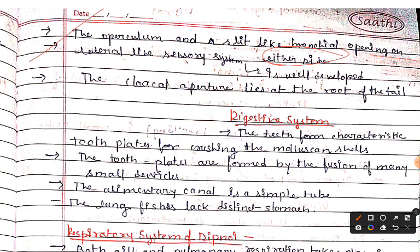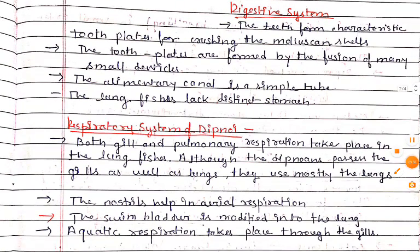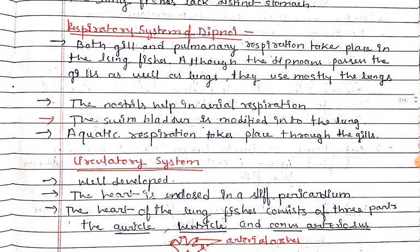The cloacal aperture lies at the base of the tail. The teeth form characteristic tooth plates for crushing molluscan cells. The tooth plates are formed by the fusion of many small denticles. The alimentary canal is a simple tube; lung fishes lack a distinct stomach.